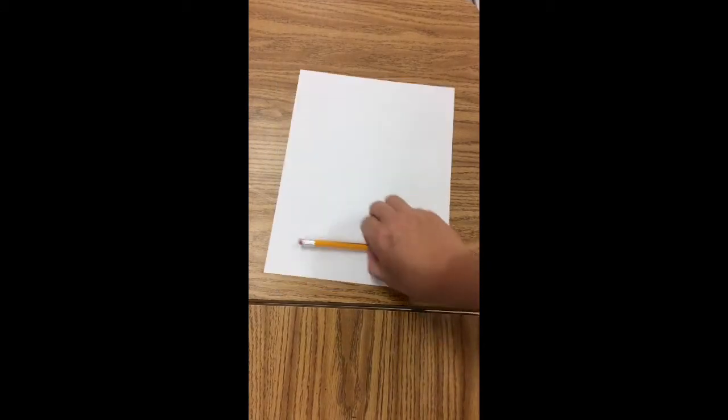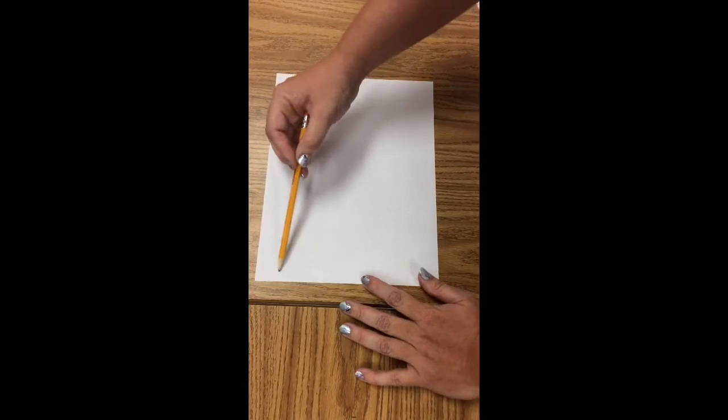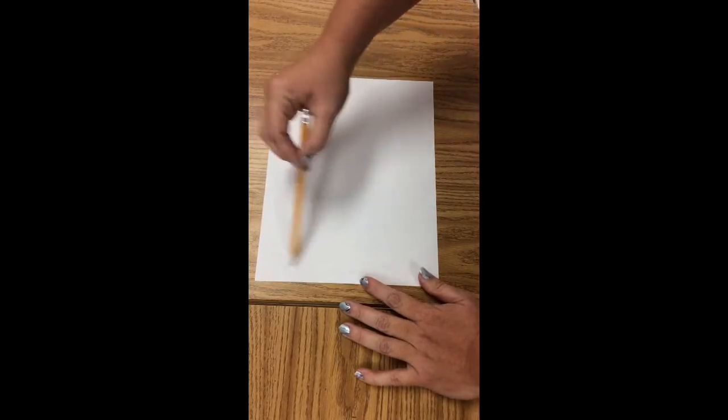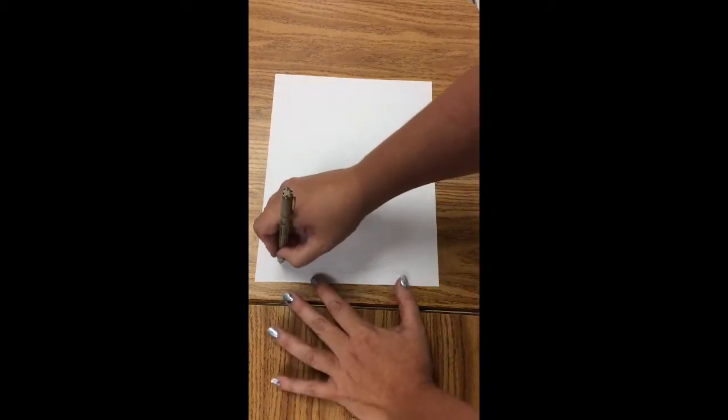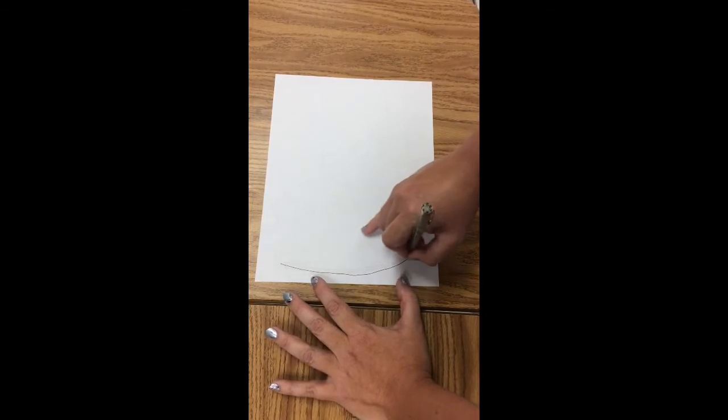The first thing we're going to do is make a W shape. Starting on one side we're gonna have a straight line going down. Let me go ahead and do this in pen just so you can see what I'm doing. You should do yours in pencil.